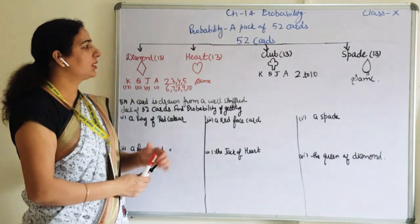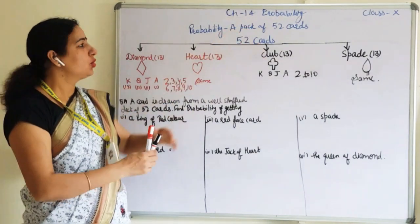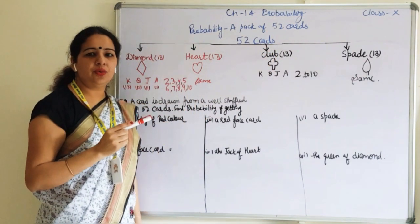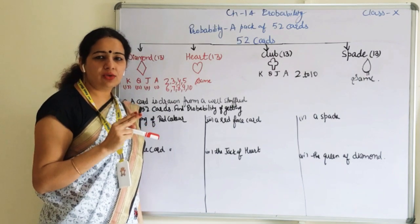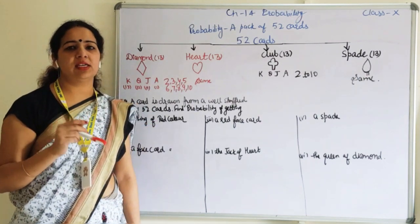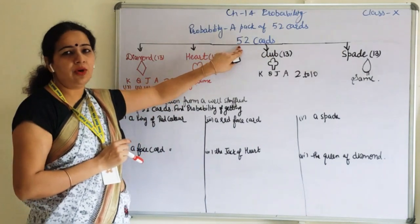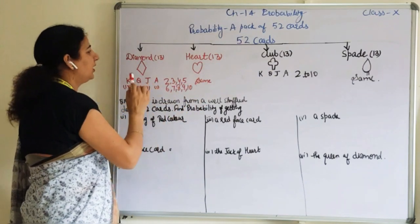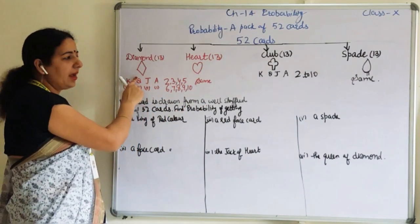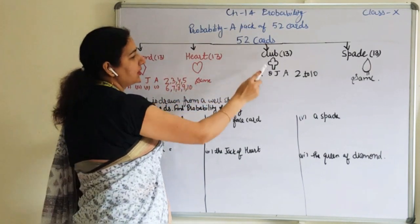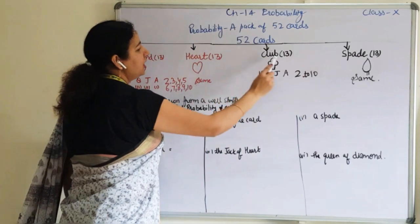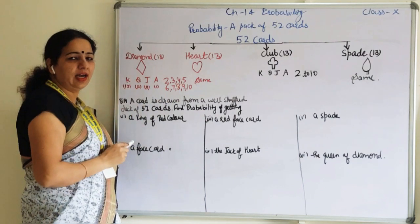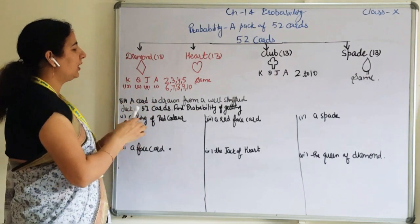We are having 52 cards in a pack. Two more joker cards are also there, but we do not consider these two joker cards. So 52 is our actual number of cards. These 52 cards are further divided into diamond, heart, club, and spade. Diamond and club are black in color; heart and spade are red in color.